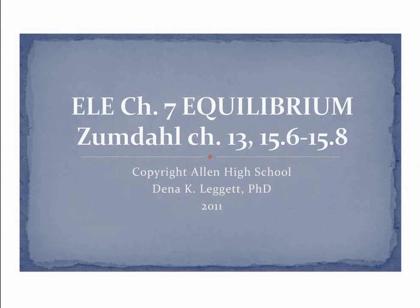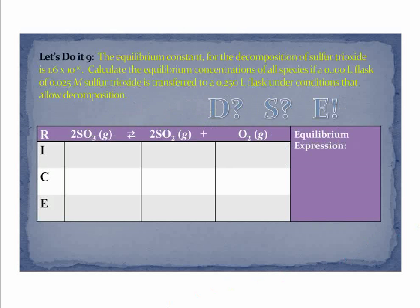We are on Let's Do It 9 of our study of equilibrium. In this case, we are looking at yet another decomposition: sulfur trioxide going to sulfur dioxide plus oxygen. So the reaction was given to us. Remember that the RICE grid won't. I have a volume here — put a V with an arrow by it — and I have a molarity, capital M. I have a KC value in concentration.